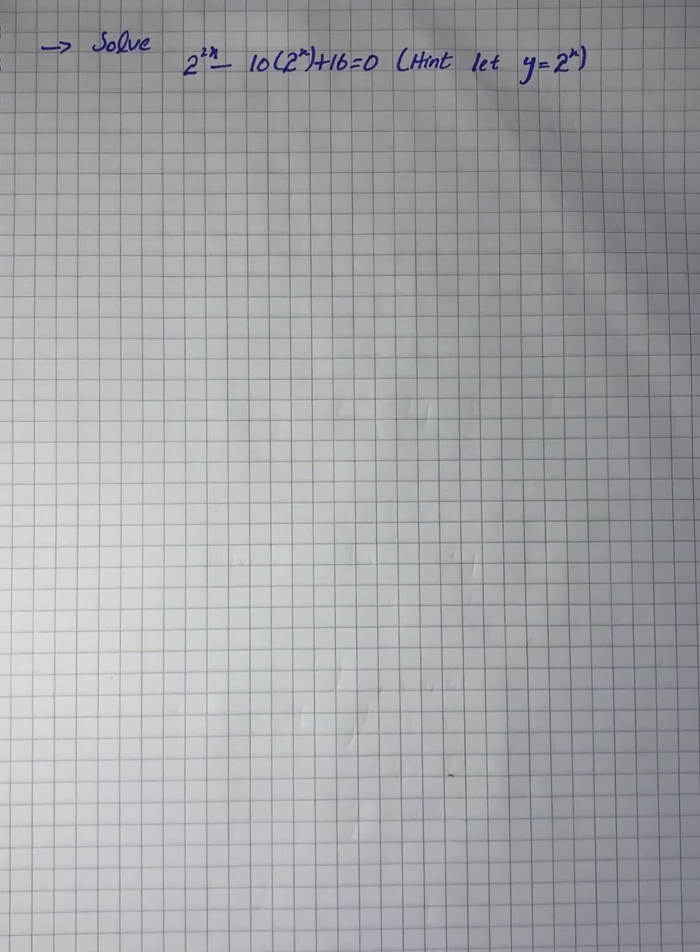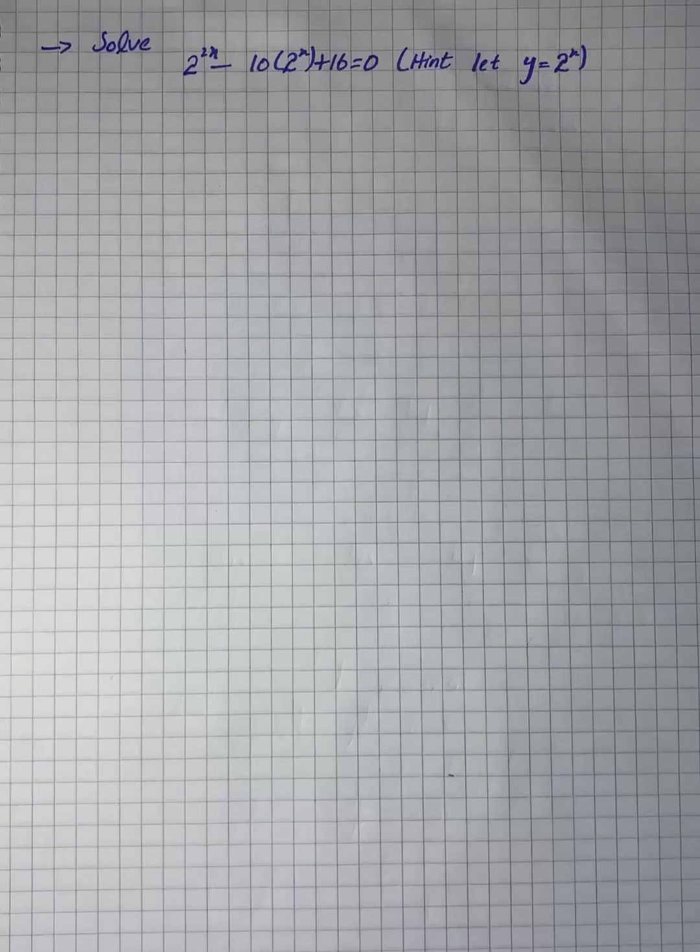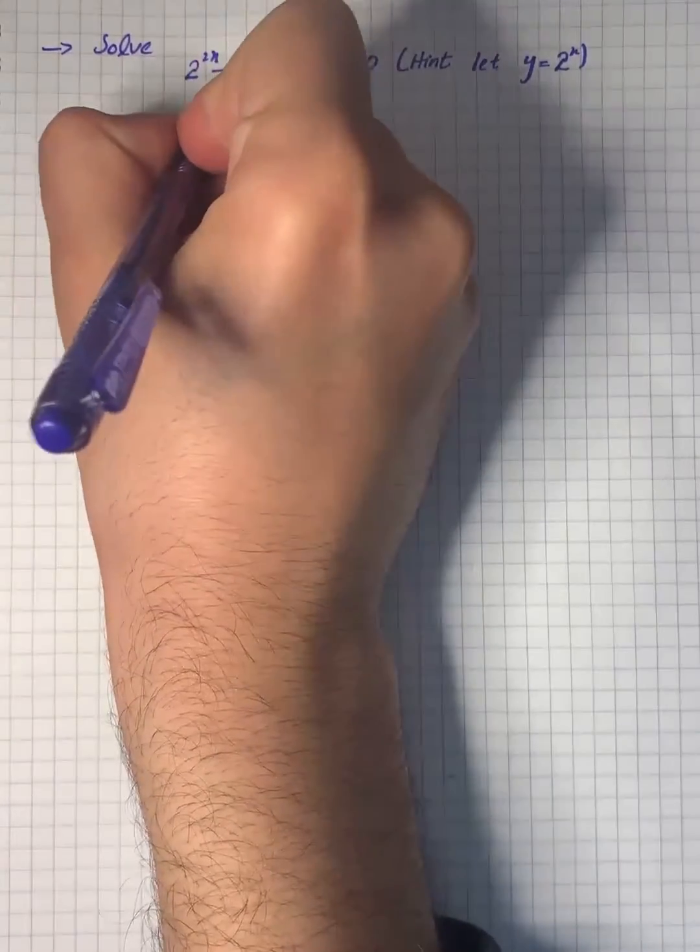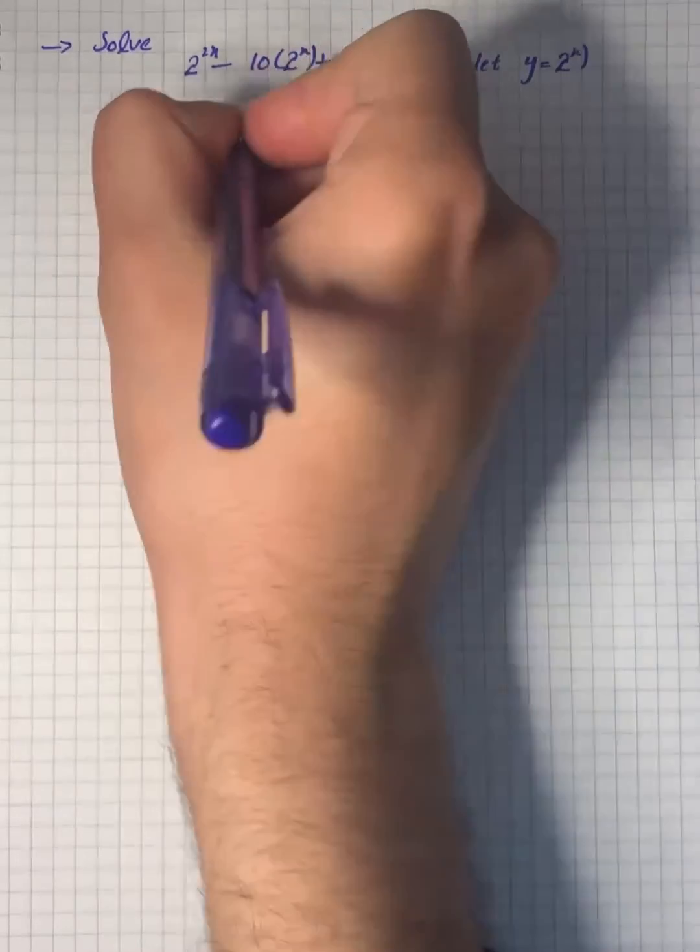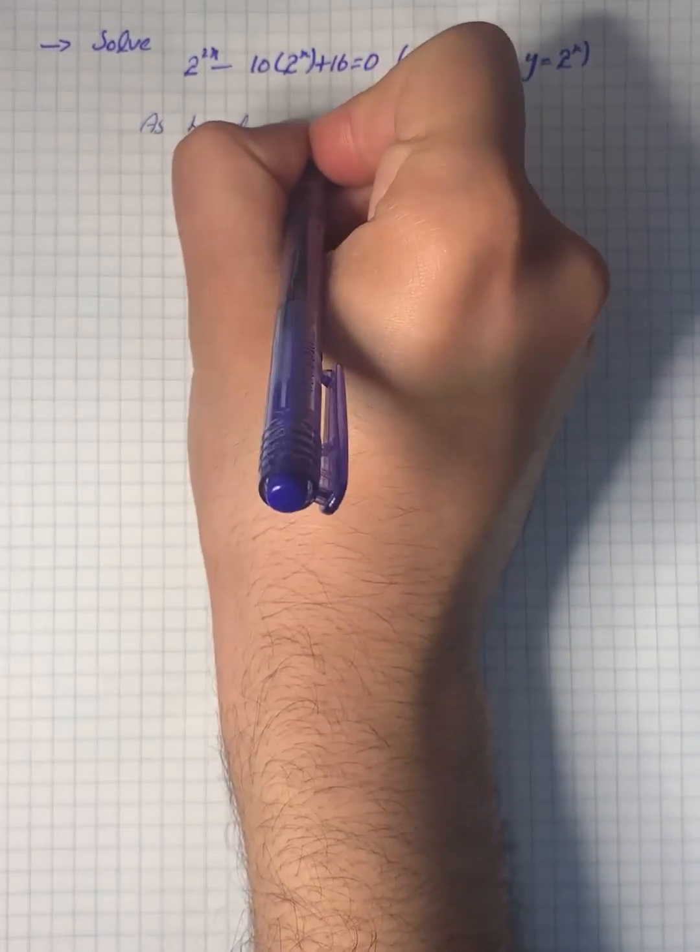We have an equation to solve: 2^(2x) - 10(2^x) + 16 = 0. As hinted, we will let y = 2^x.